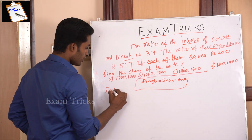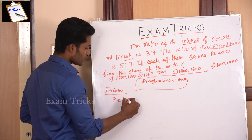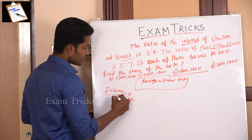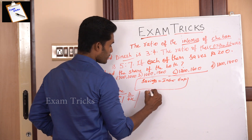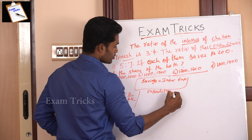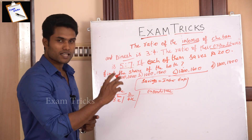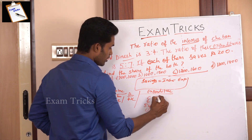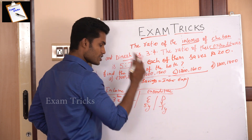Let income of Chetan be 3x and income of Dinesh be 4x. The expenditure ratio is 5 to 7, so expenditure of Chetan is 5y and expenditure of Dinesh is 7y.